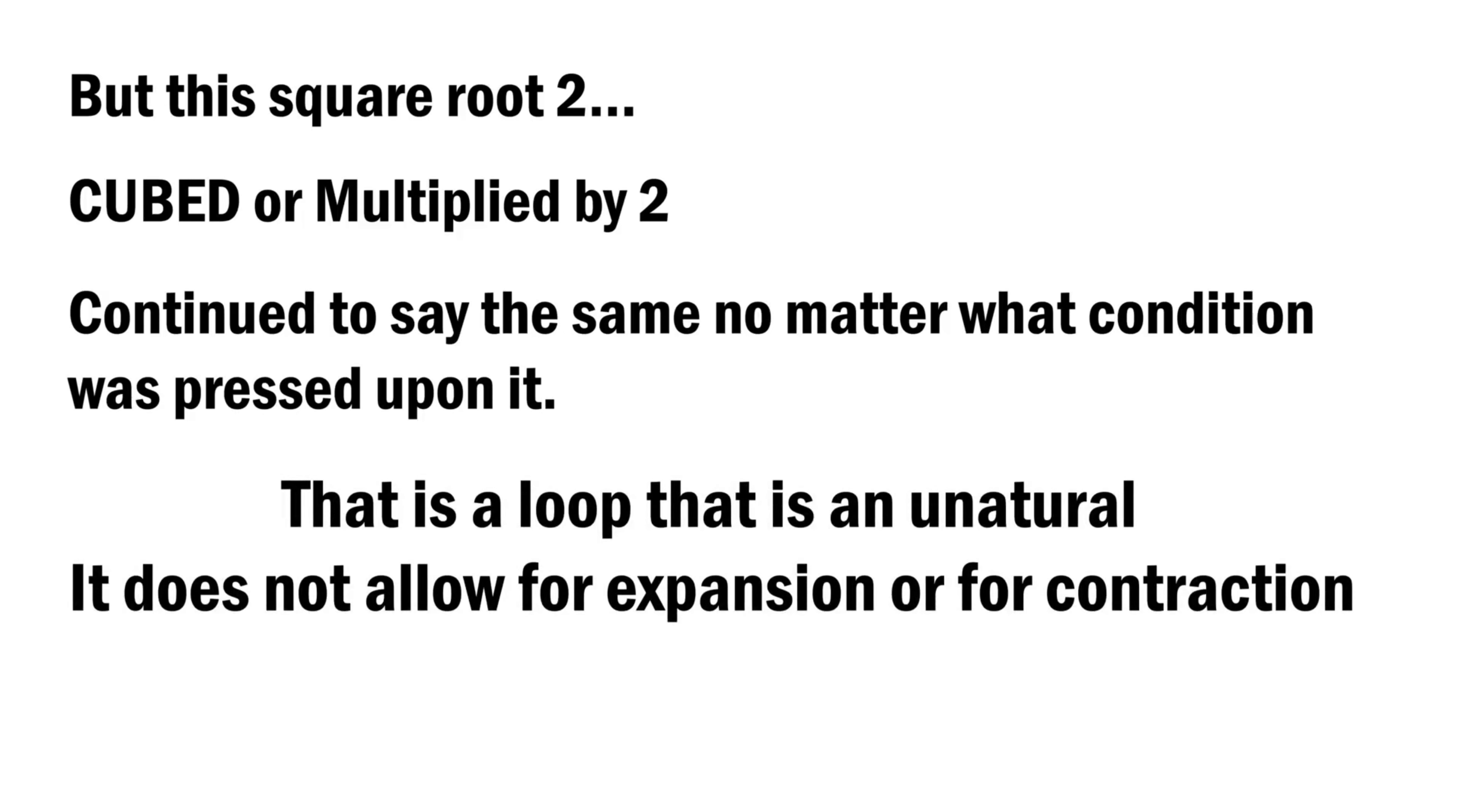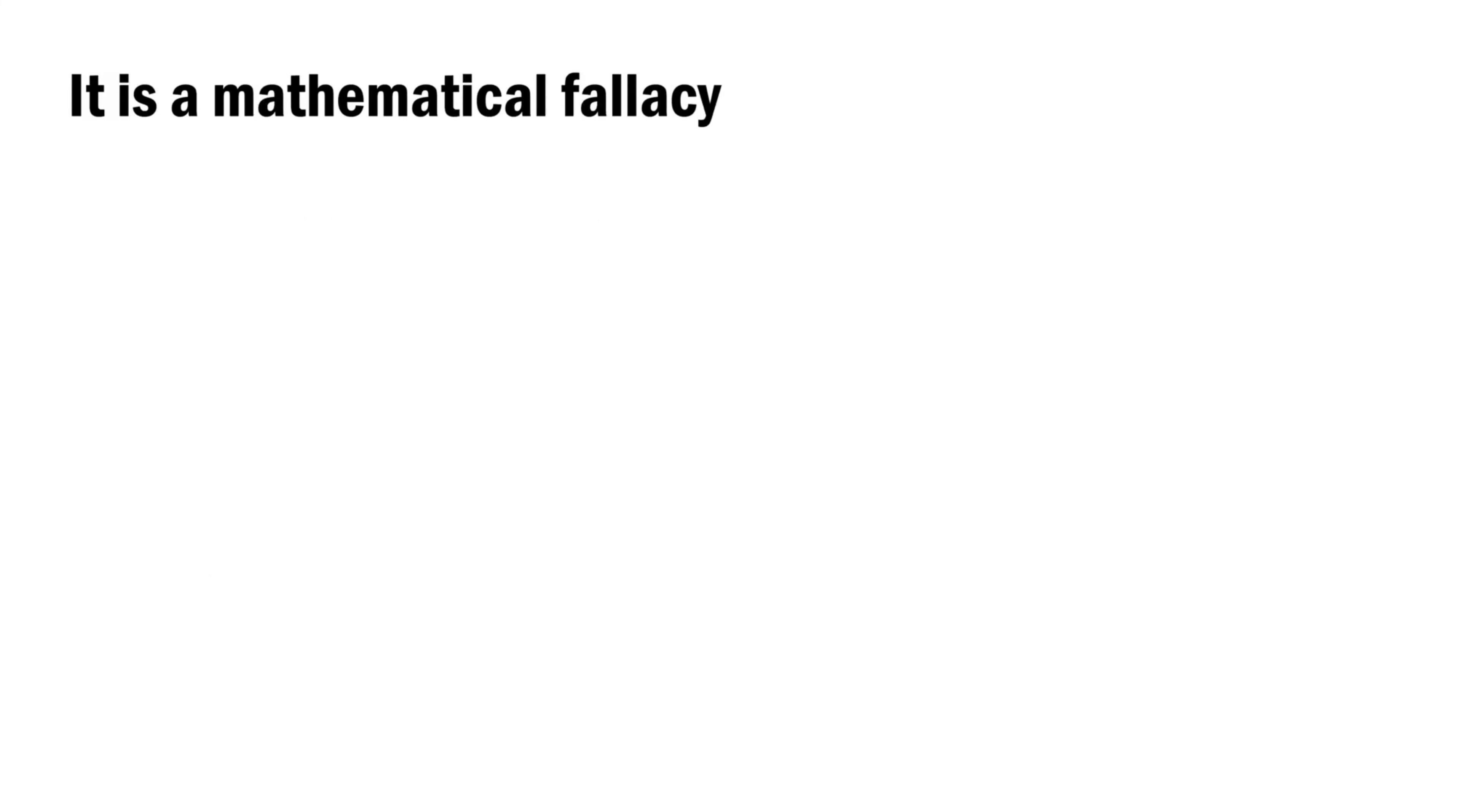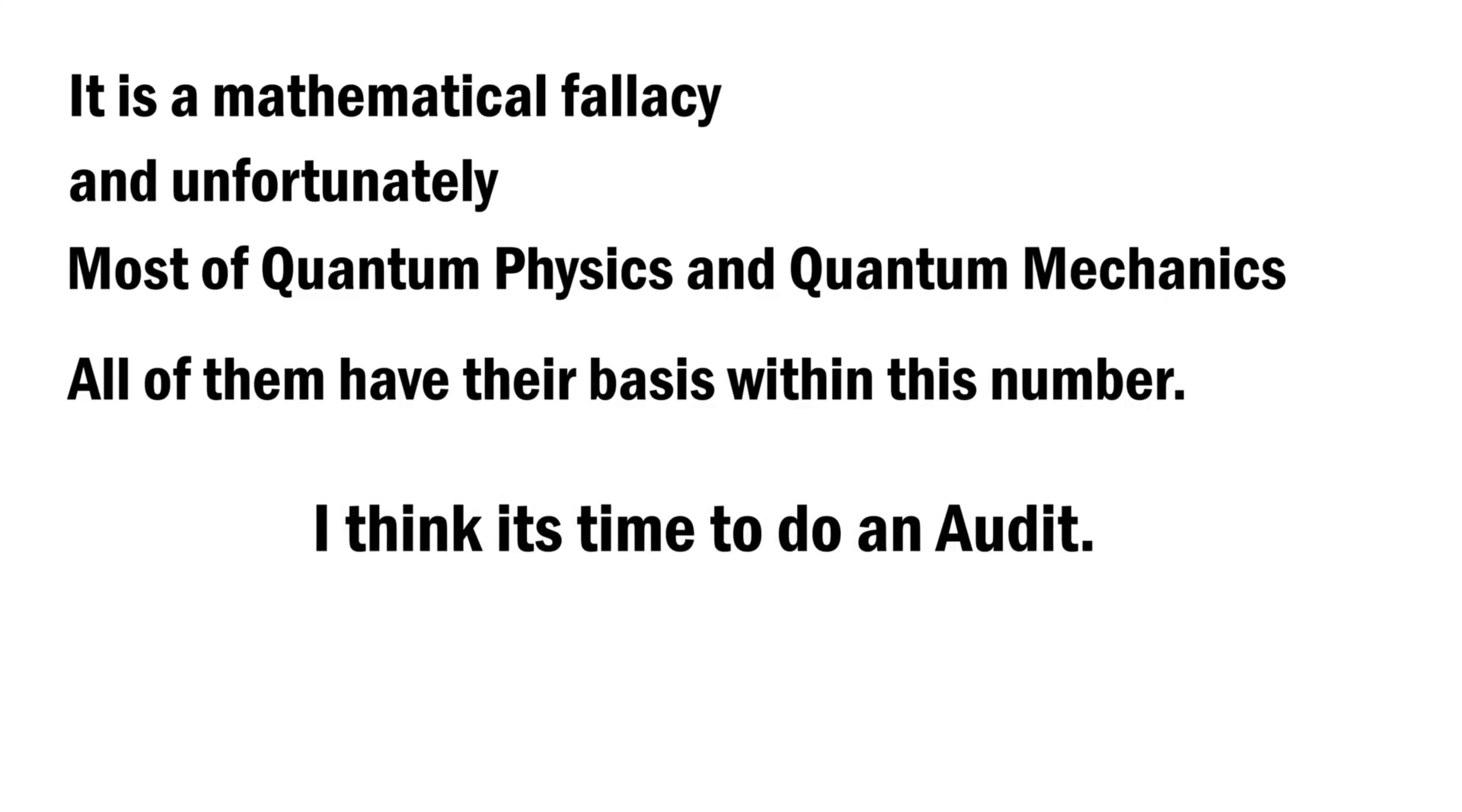But this square root of 2 cubed or multiplied by 2 continued to say the same no matter what condition was pressed upon it. That is a loop. That is an unnatural number. It does not allow for the expansion and contraction of the universe. It is a mathematical fallacy, and unfortunately most of quantum physics and quantum mechanics have their basis, their foundation rested in this number. However, I think it's time to do an audit.